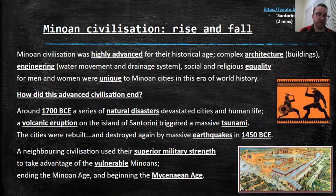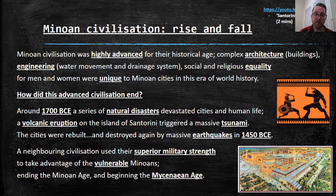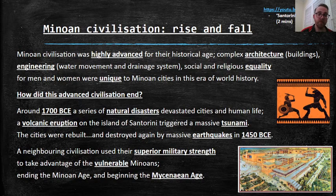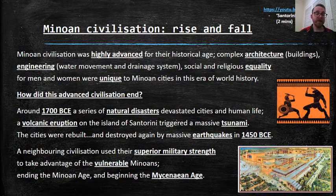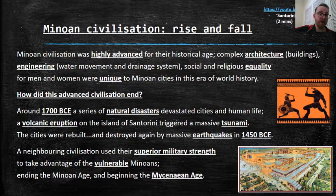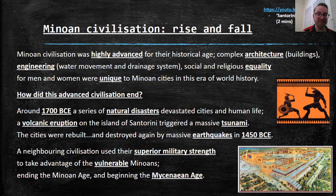Minoan civilization was highly advanced for their historical age. Because of their tools, they could build complex buildings. They had engineering skills, so they could move water from point A to point B — which doesn't sound impressive, but if you were put on a deserted island and told to get water from one part of the island to another 10 kilometres away, you would struggle. So this was very impressive for ancient Greek history.